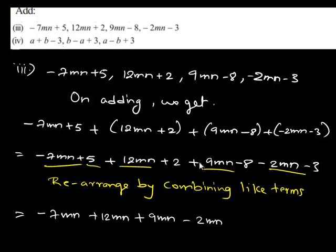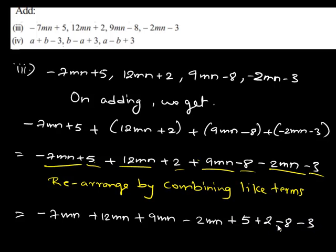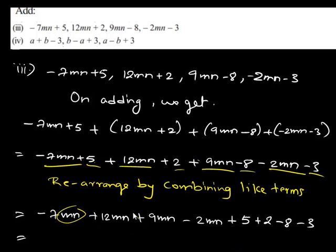Since 5, 2, negative 8, and negative 3 have their unique fixed numerical values, therefore all these are also constant terms. We can simplify these terms, so let us write them together: 5 plus 2 minus 8 minus 3. Now, in all these 4 mn terms, the variable factor is mn, so let us take mn common from all these 4 terms.